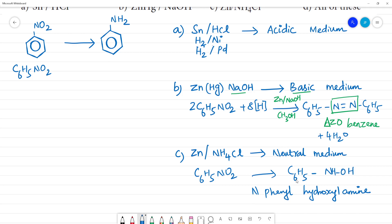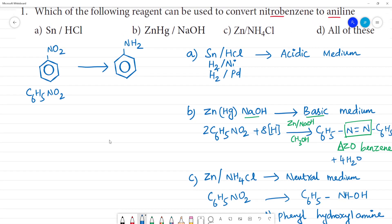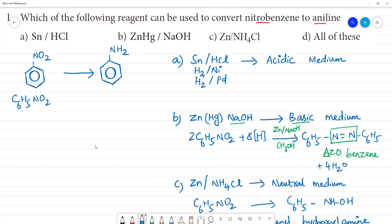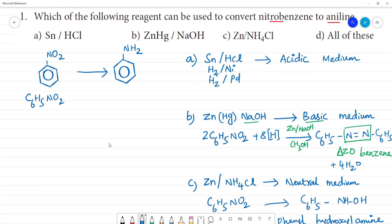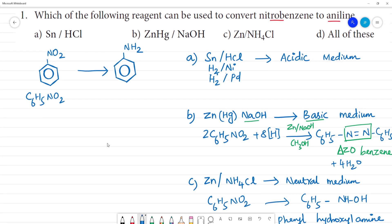So to differentiate: in acid medium, nitrobenzene converts to aniline. In basic medium, it gives azo-benzene. In neutral medium, it gives a hydroxyl compound (N-phenyl hydroxylamine). Since the question asks for conversion to aniline, we use acidic medium. So the answer is option A.